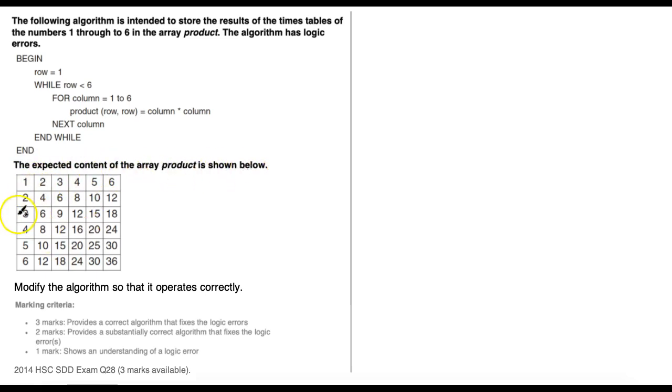The expected content of the array product is shown below. In a two-dimensional array, storing rows where each row array has a whole heap of columns, this is what it should look like if the algorithm was working correctly. For example, one times one equals one, one times two equals two, one times three equals three and so on; two times two equals four, two times three equals six, two times four equals eight; three times two equals six, three times three equals nine and so on. Where each row and each column intersect, we have the result of that row multiplied by the column — displaying all times tables from one to six.